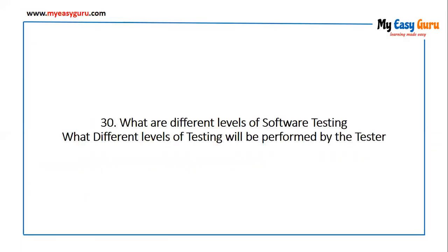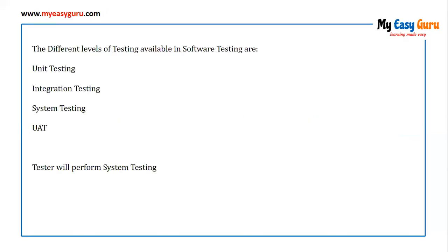What are the different levels of software testing, and which are performed by a tester? The different levels of testing available in software testing are: unit testing, integration testing, system testing, and user acceptance testing. A tester will perform system testing.